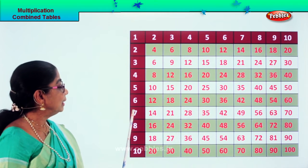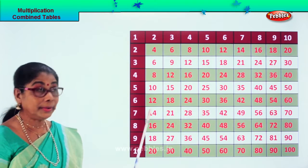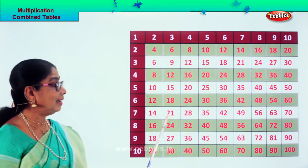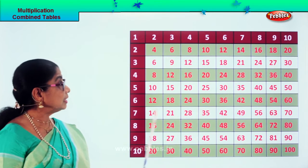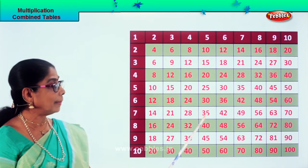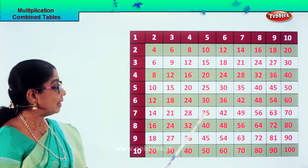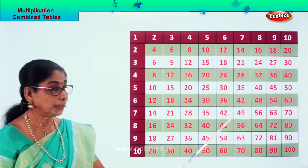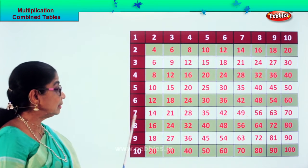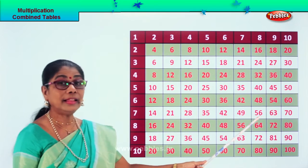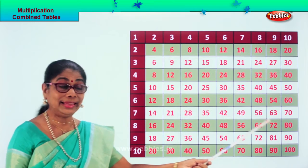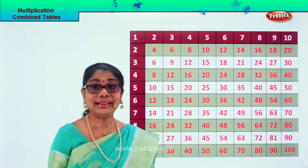Now here — take the seven: seven ones are seven, seven twos are fourteen, seven threes are twenty-one, seven fours are twenty-eight, seven fives are thirty-five, seven sixes are forty-two, seven sevens are forty-nine, seven eights are fifty-six, seven nines are sixty-three, seven tens are seventy.